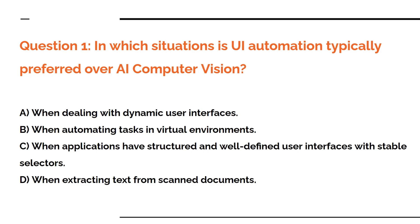When should you go for UI automation? Here are the options: A) when dealing with dynamic user interfaces, B) when automating tasks in virtual environments, C) when applications have structured and well-defined user interfaces with stable selectors, D) when extracting text from scanned documents.